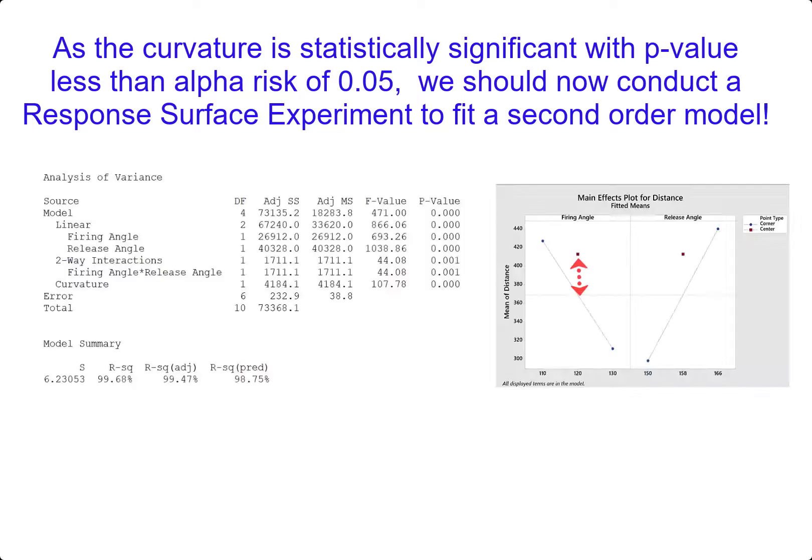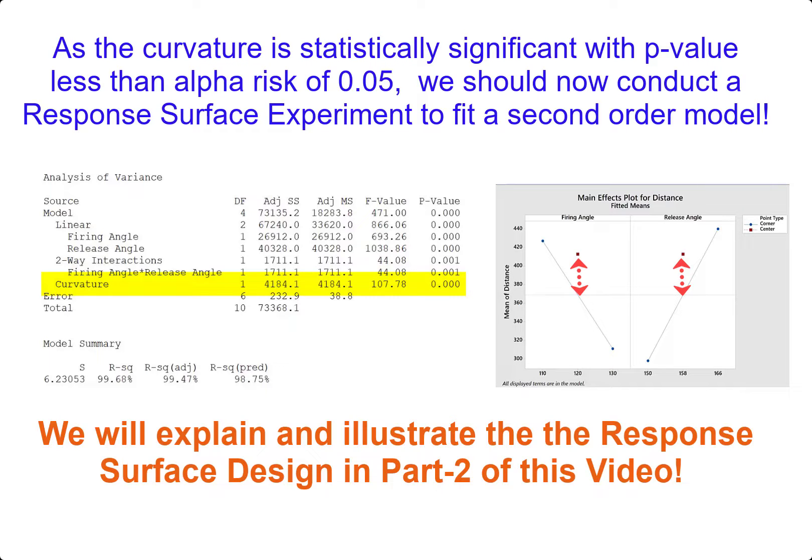As the curvature is statistically significant with p-value less than the alpha risk of 0.05, we should now conduct a response surface experiment to fit a second-order model. We will explain and illustrate the response surface design in part 2 of this video.